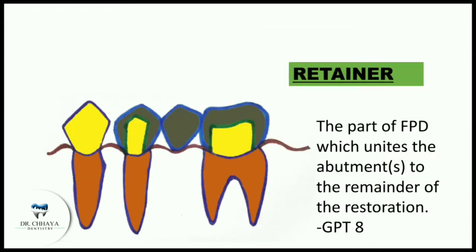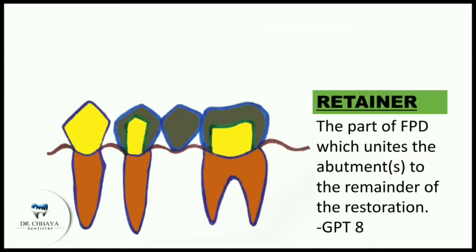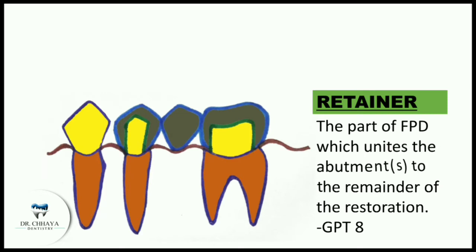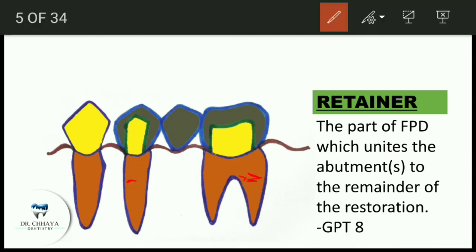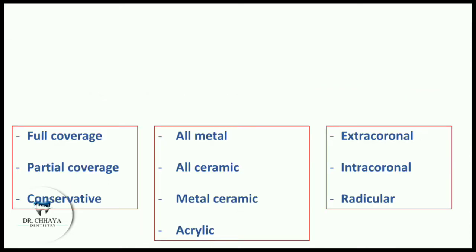By definition — GPT-8 — a retainer is the part of an FPD which unites the abutments to the remainder of the restoration. In other words, this retainer is the part of the fixed partial denture that unites the abutment tooth to the rest of the restoration. Now, what are the classifications of retainers?